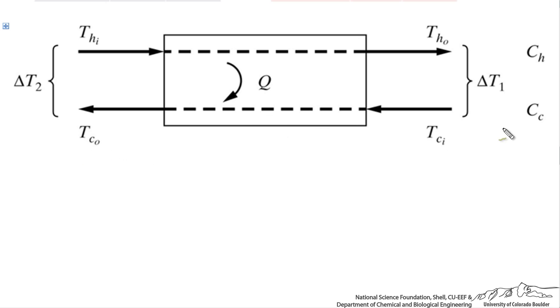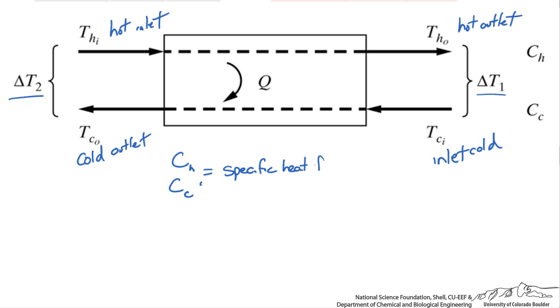If we look at a heat exchanger between a hot stream and a cold stream, we have designated our cold stream as C with inlet cold temperature and cold outlet. We have our hot inlet and hot outlet. We have some heat transfer Q and a temperature difference between the hot inlet and cold outlet as delta T2. The same on the other side we have designated delta T1.